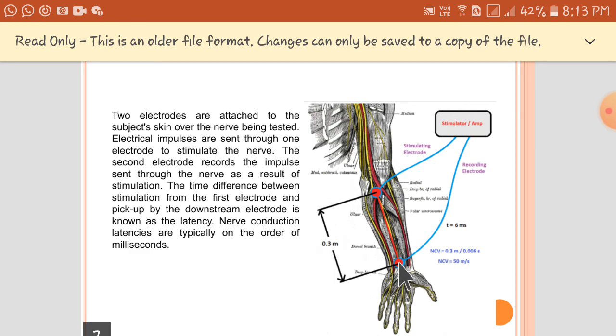Now at the other end, the second electrode will record the impulses. So this is the working of an NCV, that is a nerve conduction velocity test.